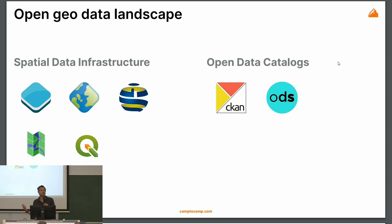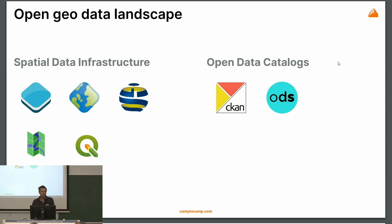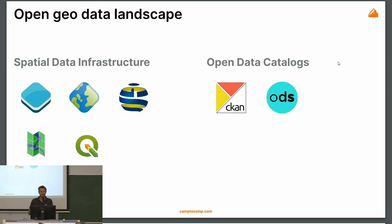A lot of administrative units have this stack, especially in Europe, because it was mandatory from the Inspire directive. We see it at state, region, department, and city levels, but also in universities, research, and even in companies. Since about a decade ago, there was a new movement — open data — where everybody was encouraged to push their data, to share their data transparently. And this movement was completely split from the geospatial movement.